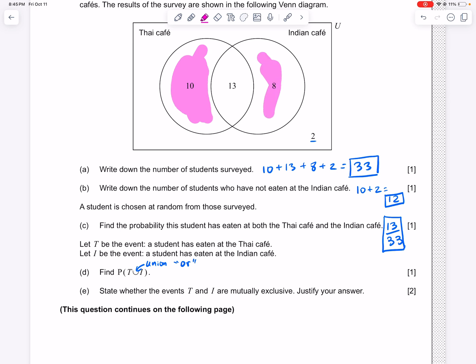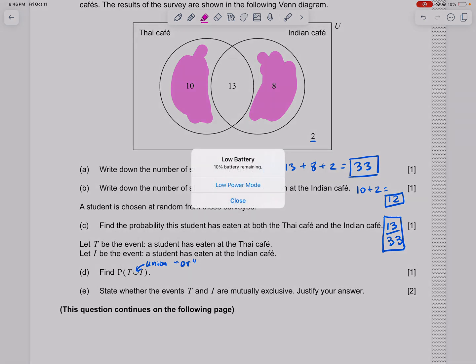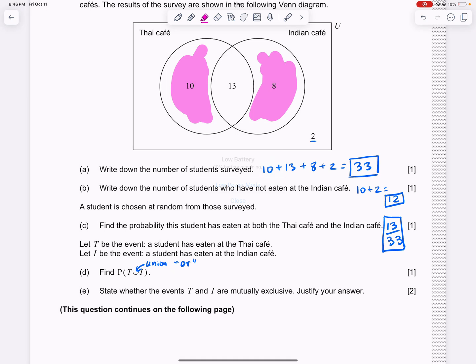These 8 people have eaten at the Indian Café only. Many people who don't know as well as you do what to do here would probably say the answer is 10 plus 8 and 18. That is not correct.